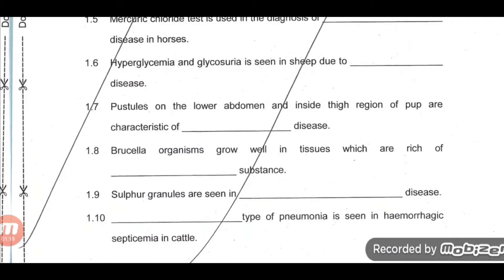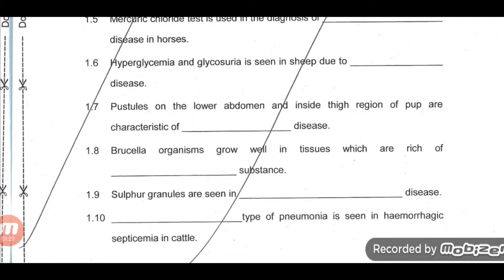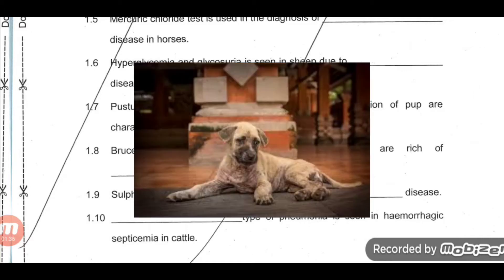Question 5: Hyperglycemia and glycosuria is seen in sheep due to enterotoxemia and pulpy kidney disease. Question 6: Pustules on the lower abdomen and inside thigh region of pups are characteristic of canine distemper disease.